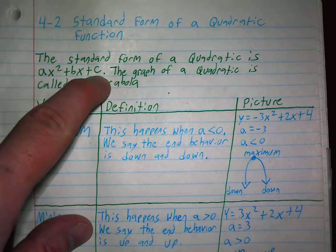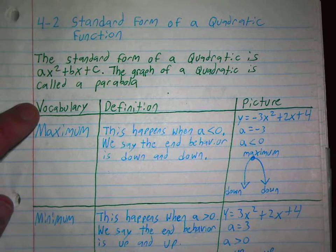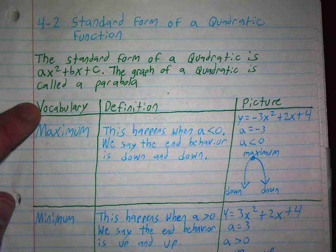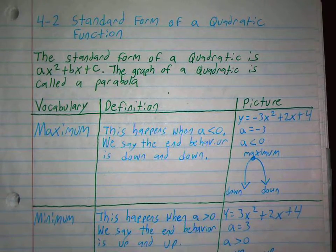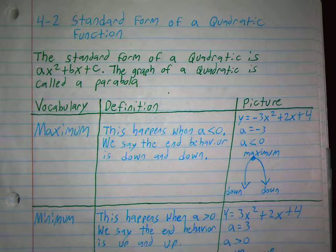The standard form is ax squared plus bx plus c. The graph of a quadratic is called a parabola. We call that the u.